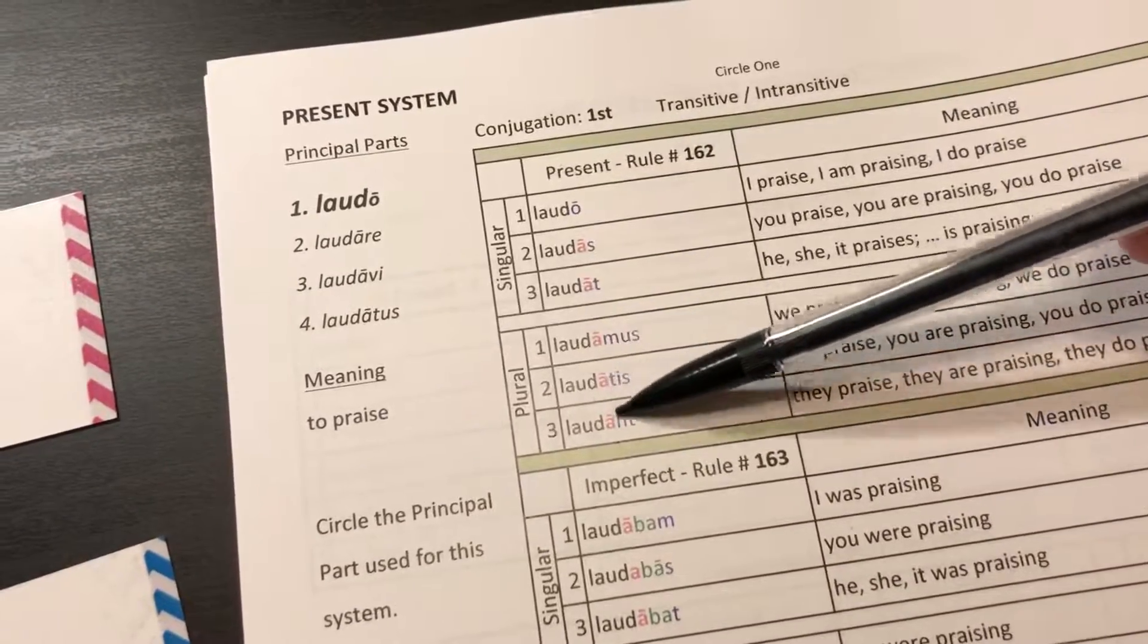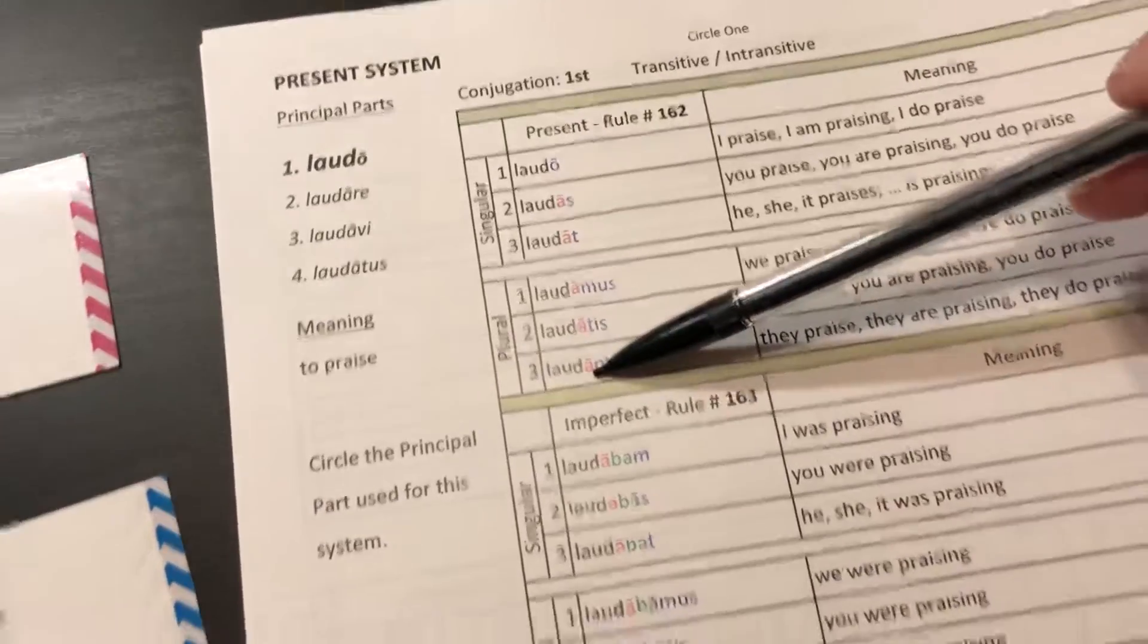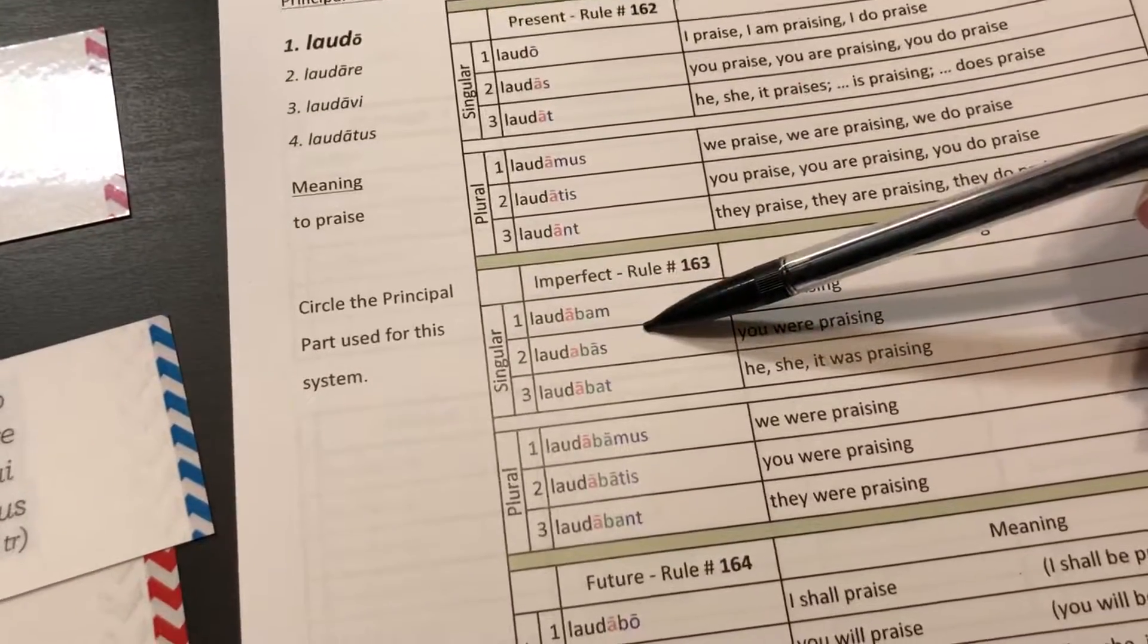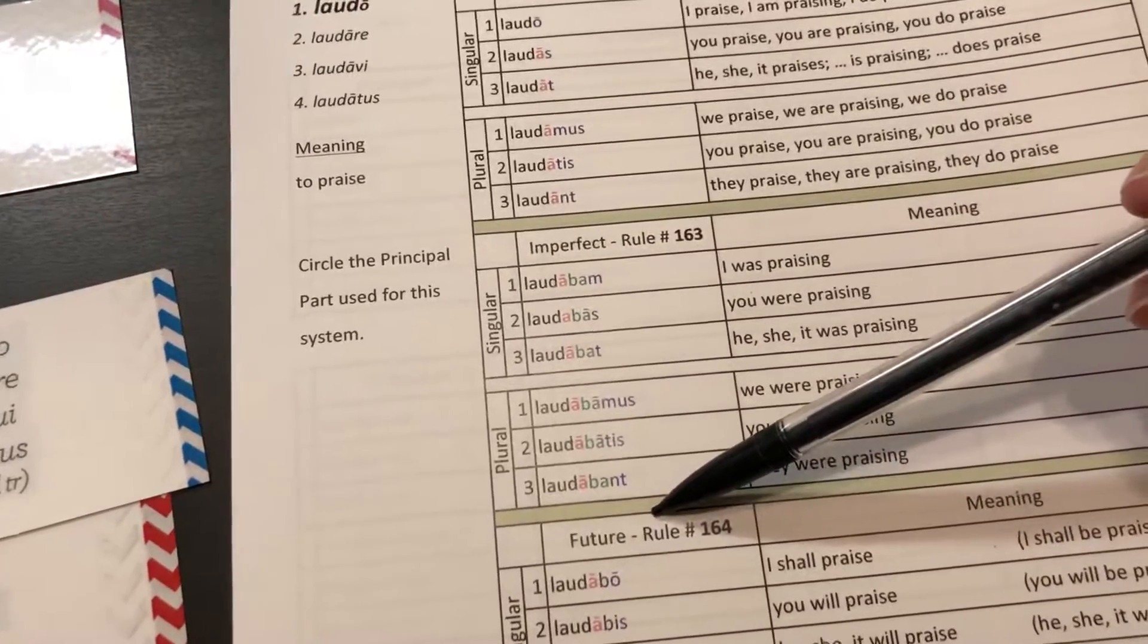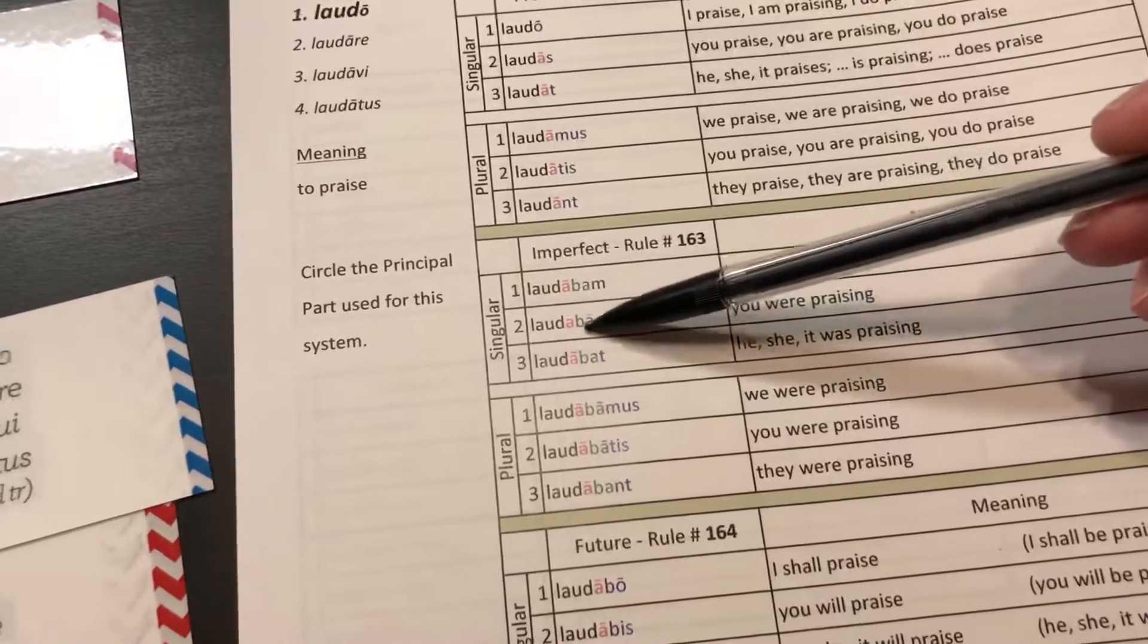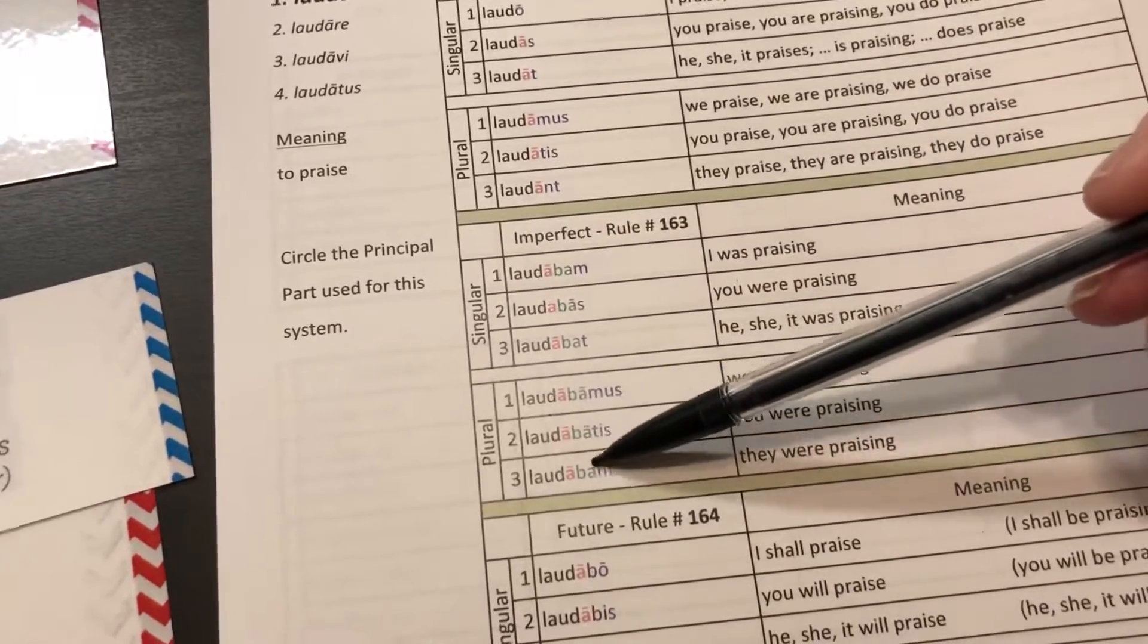Down here when we got to the imperfect, again pink, light blue. For some reason it looks purple, but it's not, it's light blue. And then the imperfect tense marker is the 'ba' and that's in green.